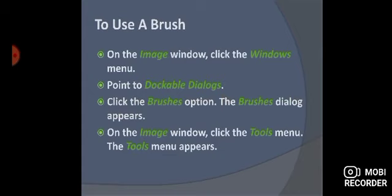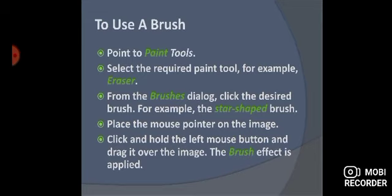To use a brush: go to the image window, click on the Windows menu, point to Dockable Dialogues, and click on the Brushes option so the brushes dialogue opens. Then go back to the image window, click the Tools menu, point to Paint Tools, and select a paint tool — for example, eraser. From the brushes dialogue, click on the desired brush — for example, the star-shaped brush. Place the mouse pointer on the image, hold and drag the left mouse button, and the brush effect is applied.